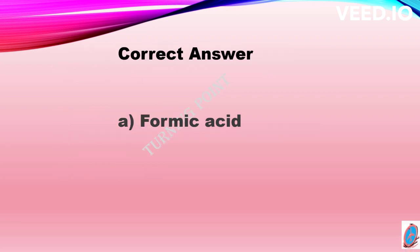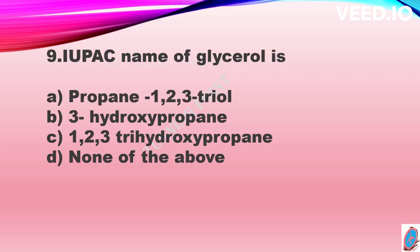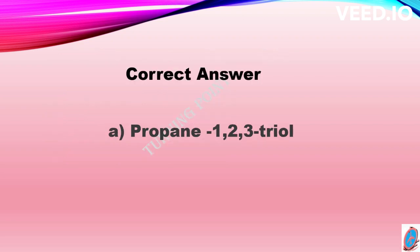Let's move on to the ninth question. The IUPAC name of glycerol is option A propane-1,2,3-triol, option B 3-hydroxypropane, option C 1,2,3-trihydroxypropane, and option D none of the above. The correct answer is propane-1,2,3-triol. The IUPAC name of glycerol is propane-1,2,3-triol. And that's all for today.